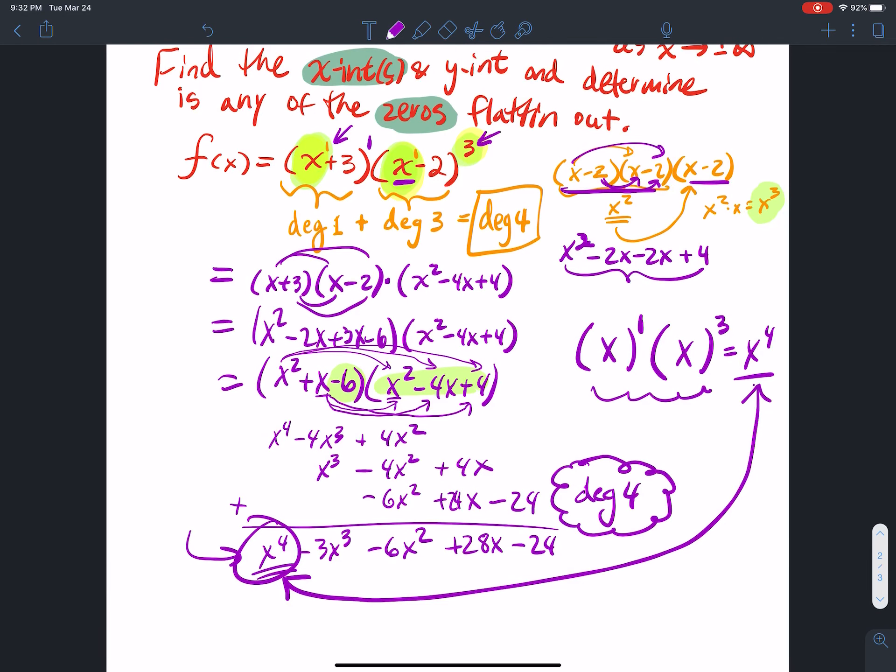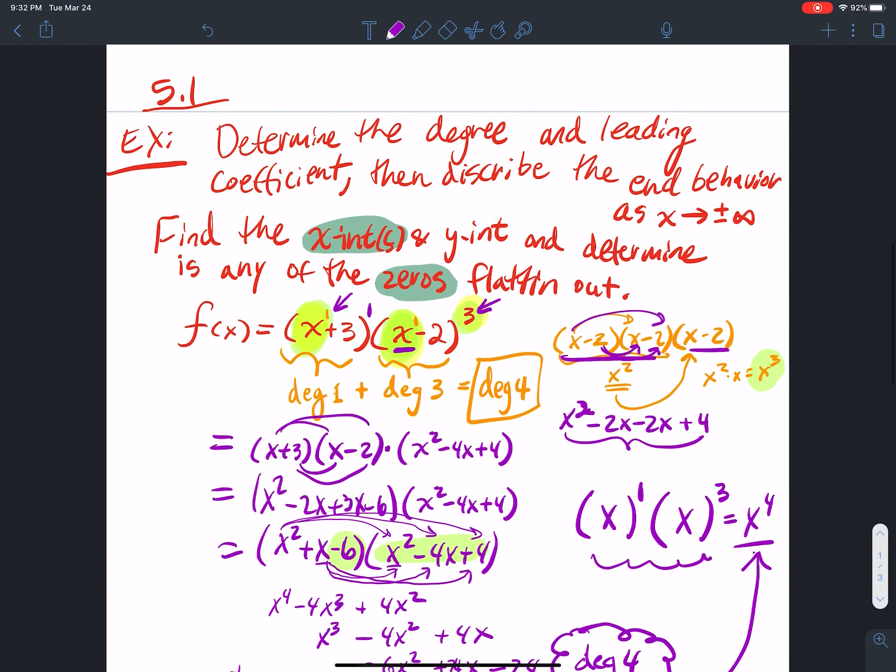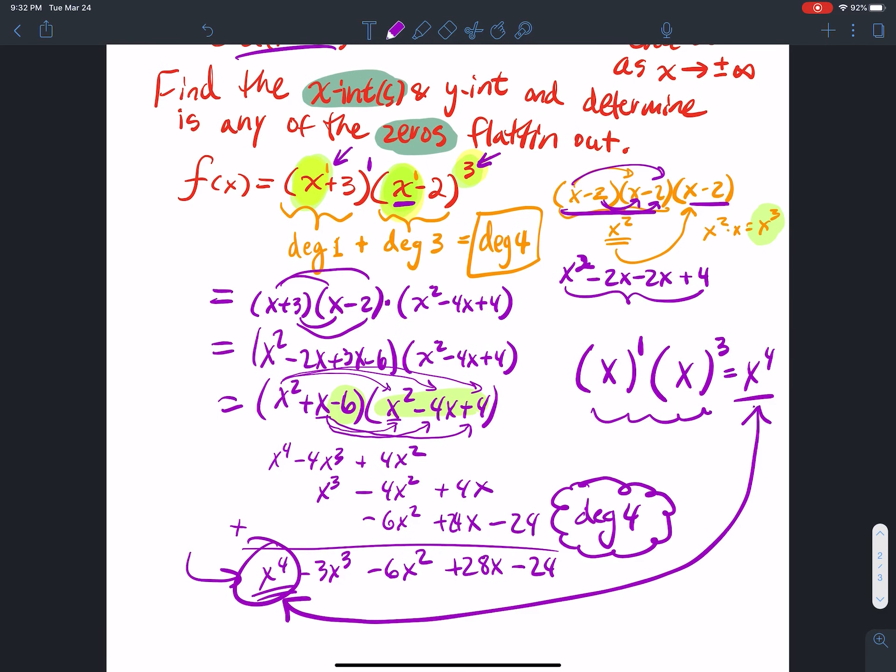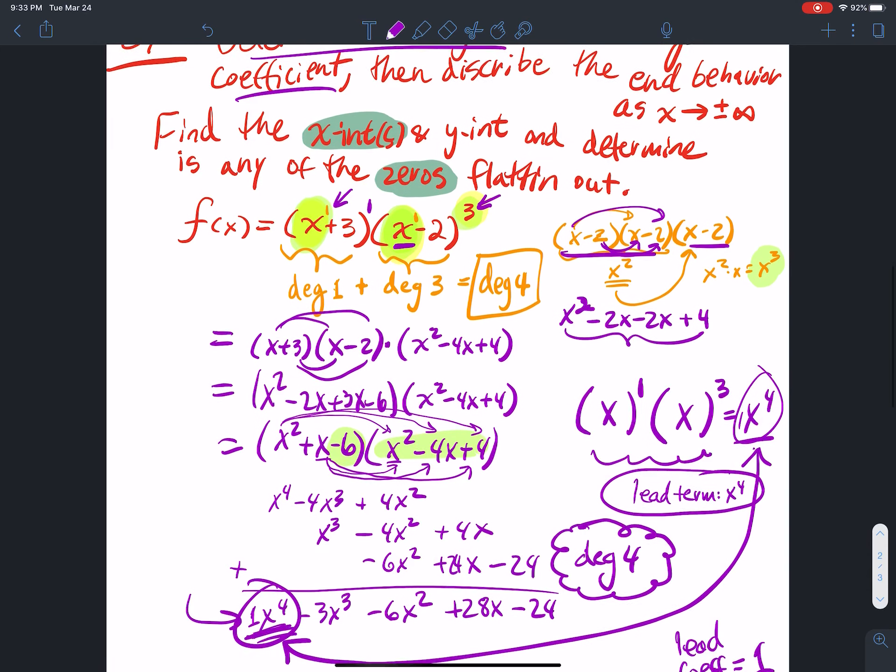All right, guys. Now, I want to not only know what the degree is and the lead coefficient, which, by the way, the lead coefficient here is the number in front of the x to the 4th term. So the lead coefficient is equal to 1. Okay? It's not x to the 4th. It's the coefficient in front. That's the lead coefficient. If they ask for the lead term, the lead term is x to the 4th. That's the whole thing. Okay? x to the 4th. 1 x to the 4th if you want to put the 1 in front.